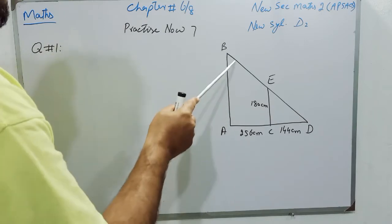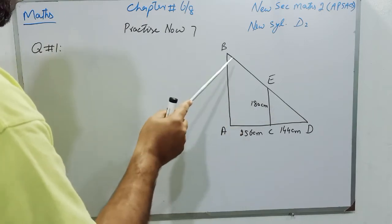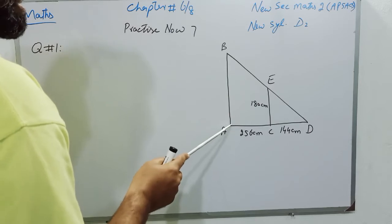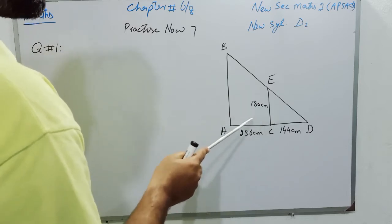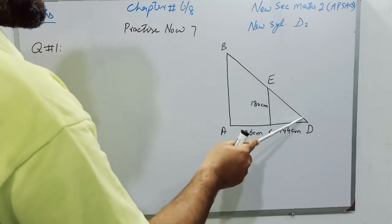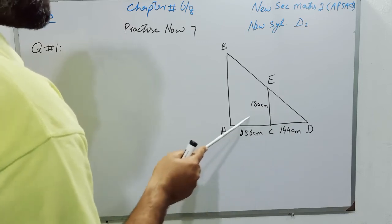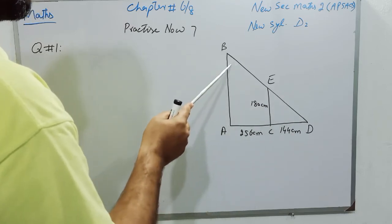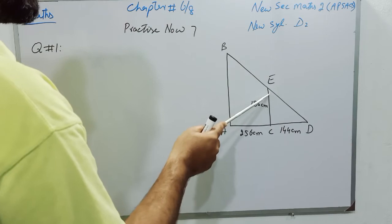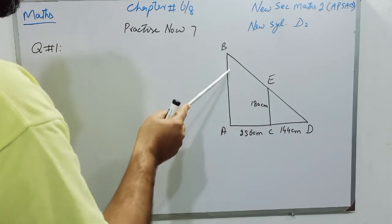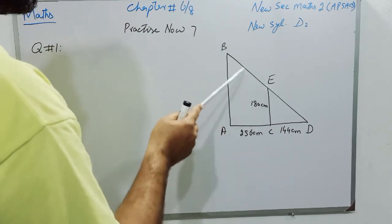Angle A and angle C are both right angles, and angle D is common for both triangles. So angle B will be equal to angle E because these two lines are parallel, and these are corresponding angles.